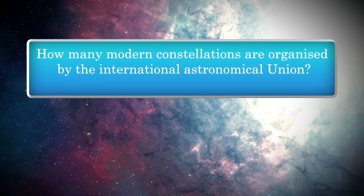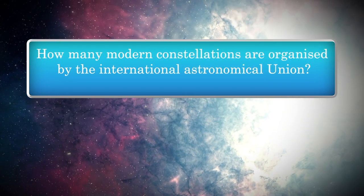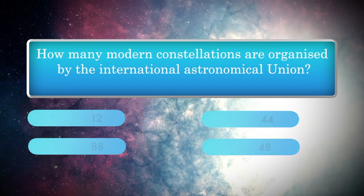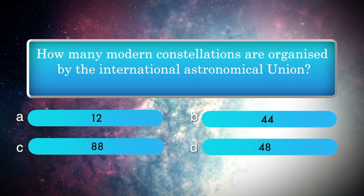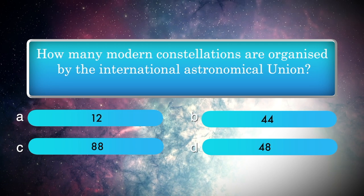How many modern constellations are organized by the International Astronomical Union? Options: 12, 44, 48, 88.